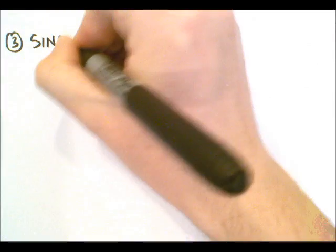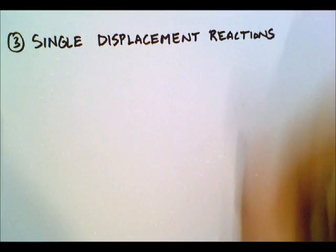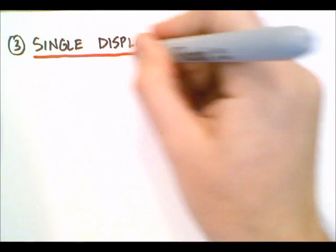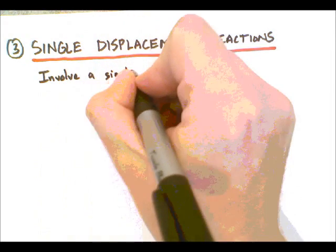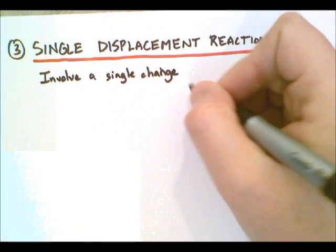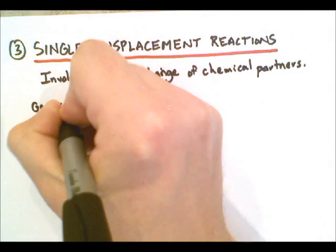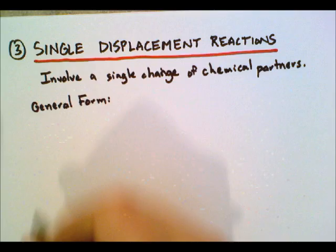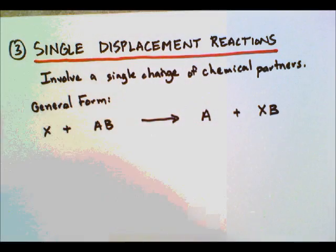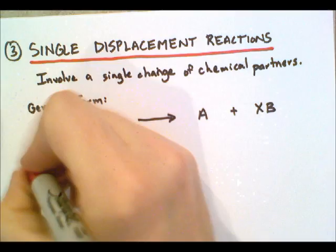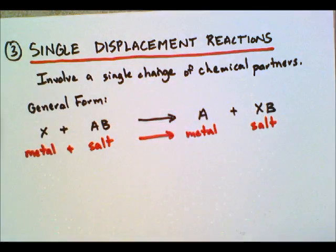The third type of reaction is what we call single displacement reactions. Single displacement reactions are a very unique type of reaction — you'll look at these in more depth in grade 11. Single displacement reactions involve one substance replacing another substance in a compound, generally a single change of chemical partners. There are two general forms: one is X plus AB produces A and XB, meaning a metal reacts with an ionic compound and creates the other metal and a new ionic compound.